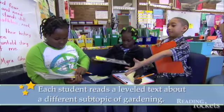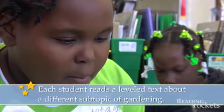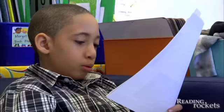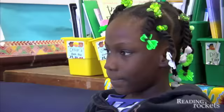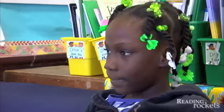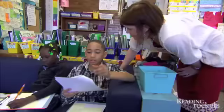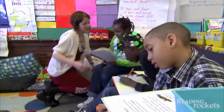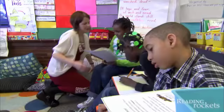In the home groups, each student reads an appropriately leveled text about a different subtopic of gardening, jotting down notes as they go. Maya will cover herbs, Savion will study flowers, and Moya will learn about vegetables. Kathy keeps an eye on kids as they work to make sure they understand the assignment and stay on track.